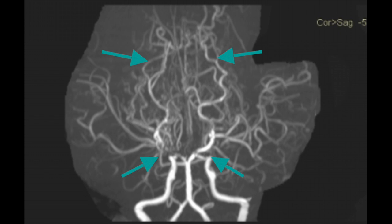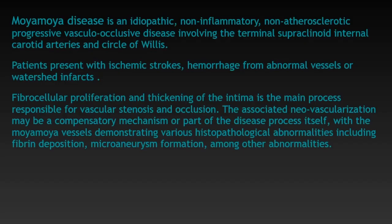Distal reformation is seen. Angiography images show multiple prominent collateral vessels forming the so-called puff of smoke or Moya Moya appearance. Moya Moya disease is an idiopathic, non-inflammatory, non-atherosclerotic, progressive vascular occlusive disease involving the terminal supraclinoid internal carotid arteries and circle of Willis. Patients present with ischemic strokes, hemorrhage from abnormal vessels, or watershed infarcts. Fibrocellular proliferation and thickening of the intima is the main process responsible for vascular stenosis and occlusion.